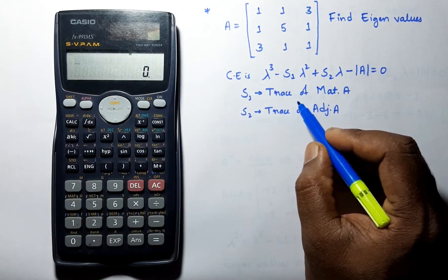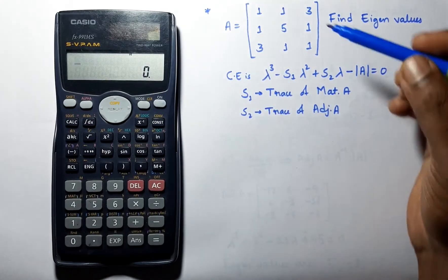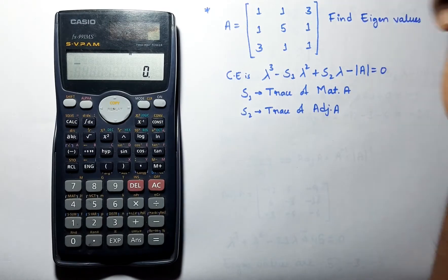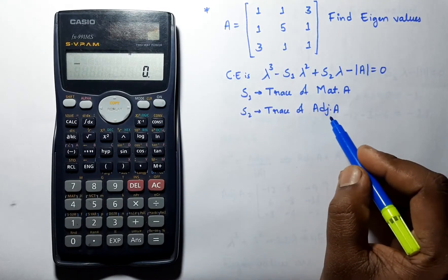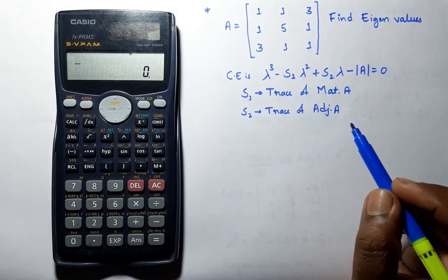S1 is the trace of matrix A, which is the sum of the diagonals of matrix A. S2 is the trace of adjoint of matrix A.